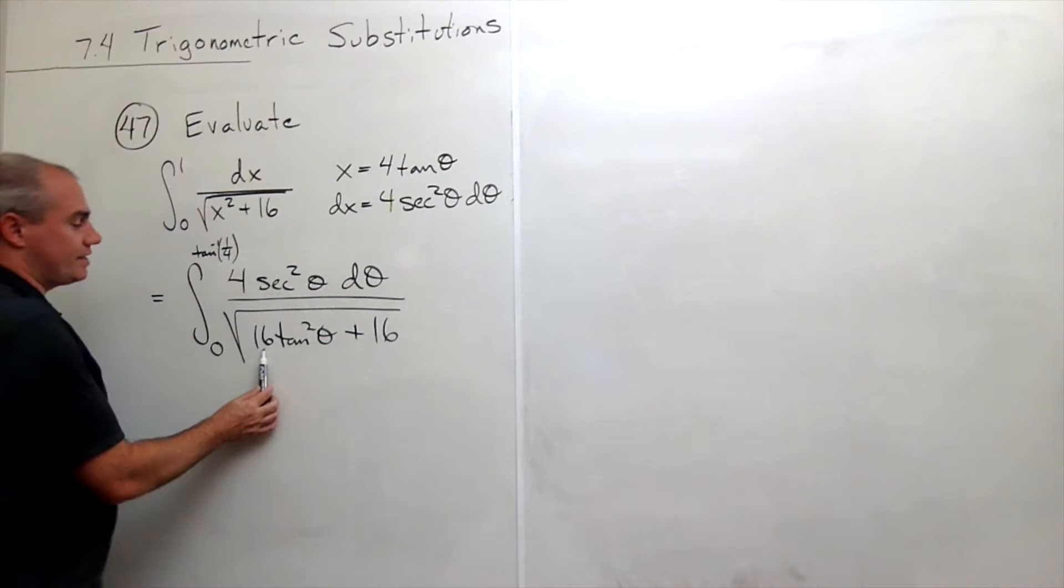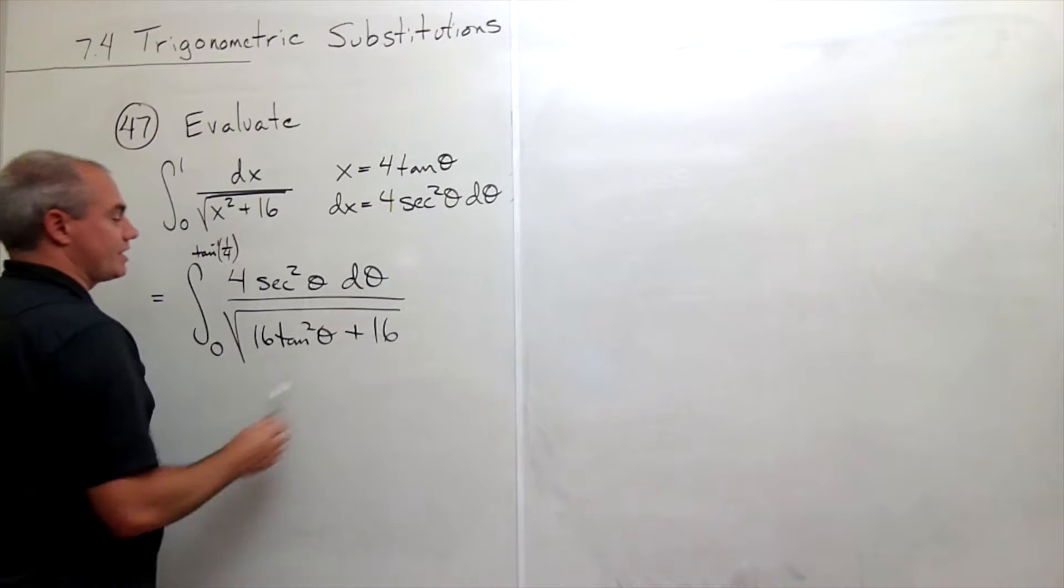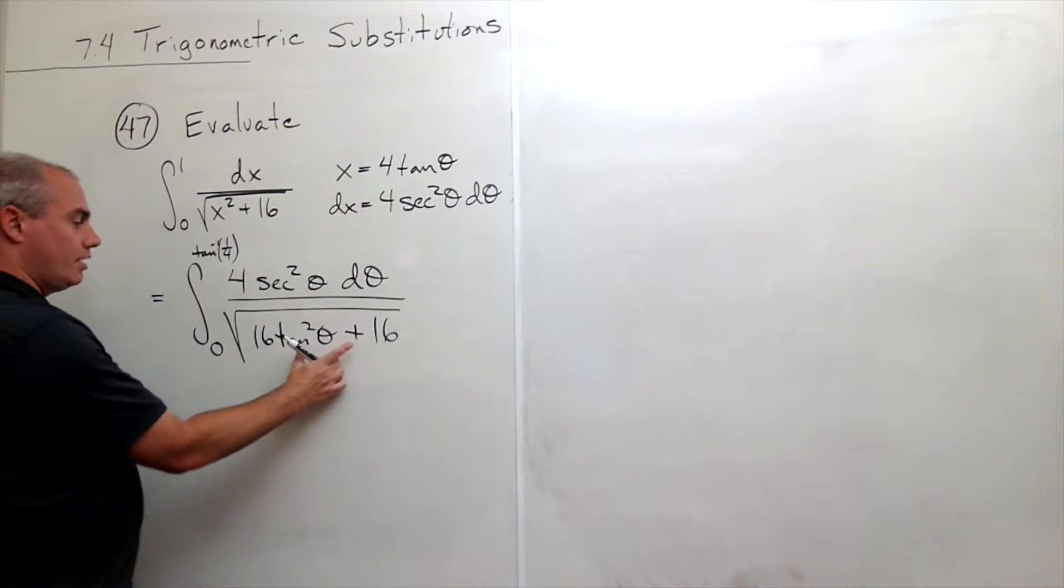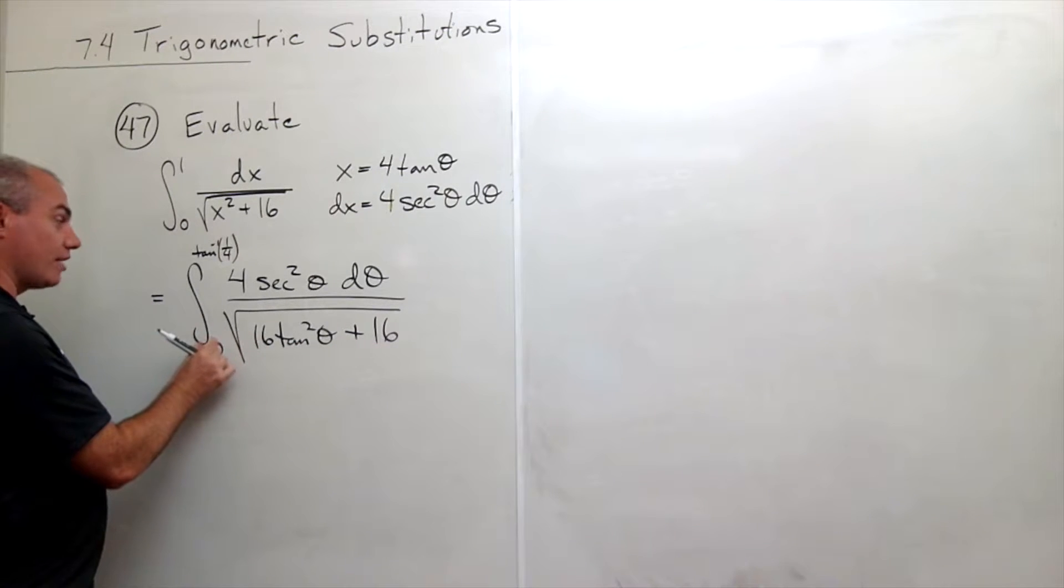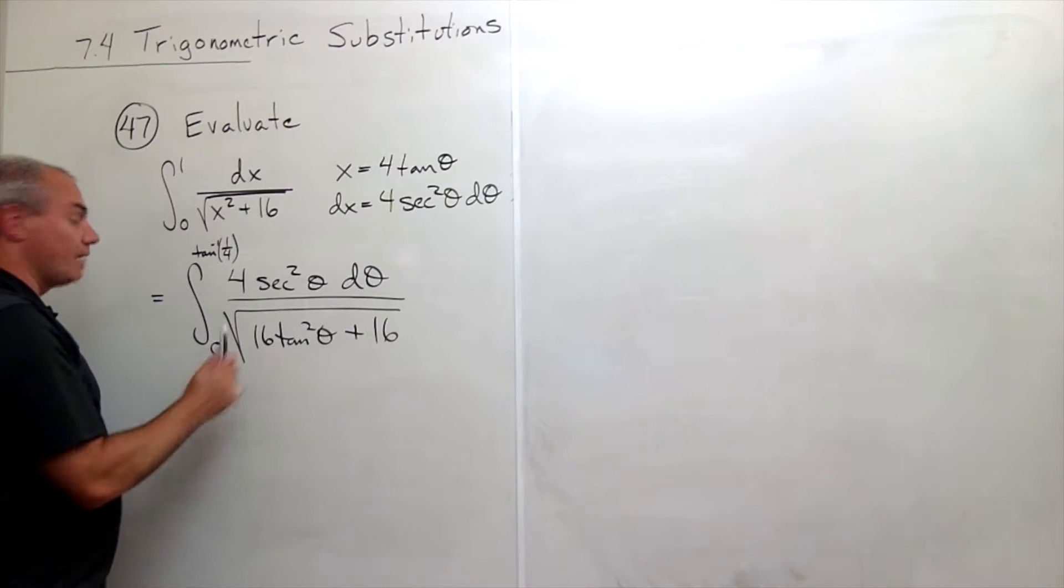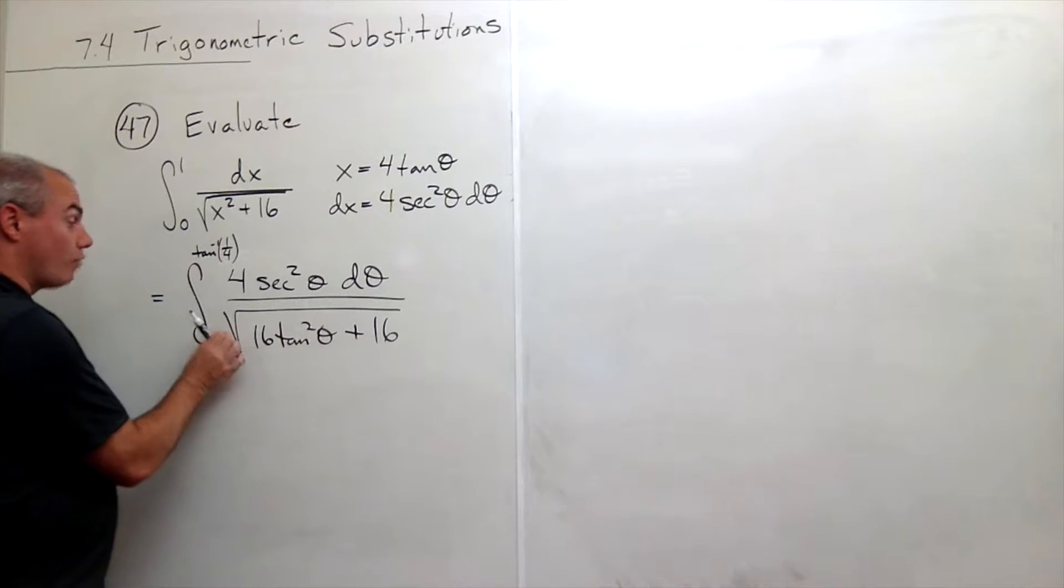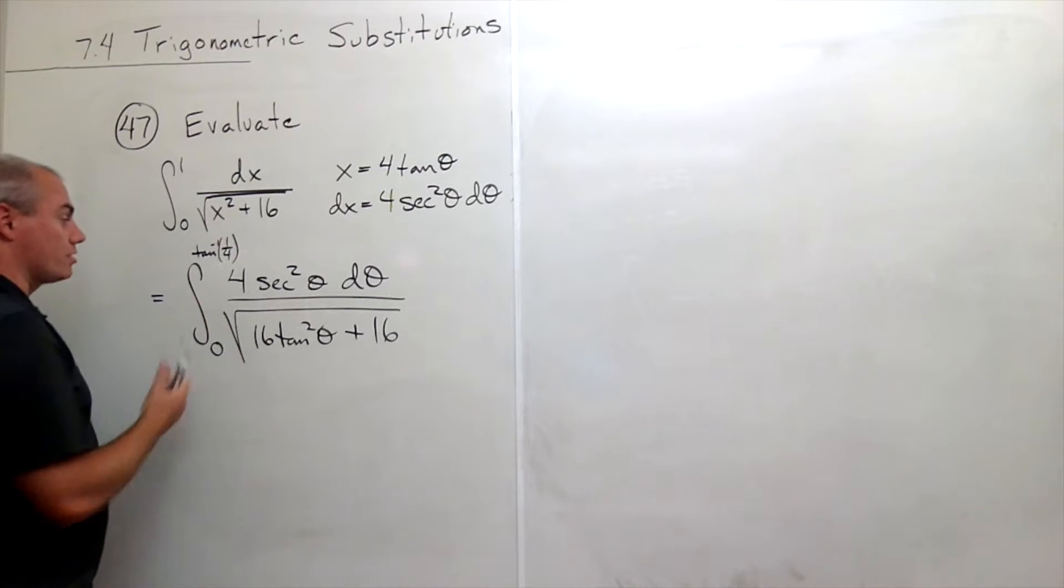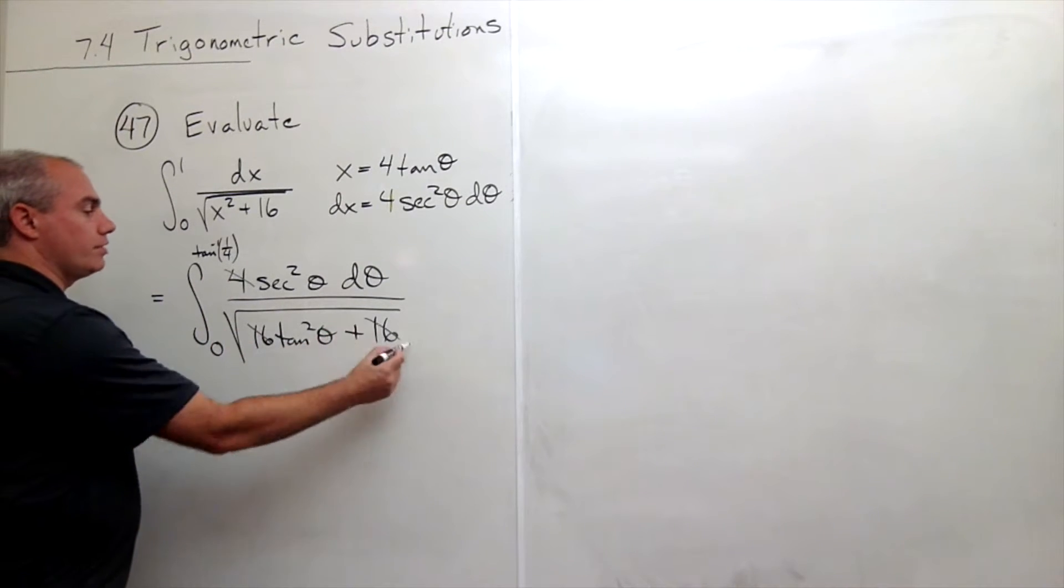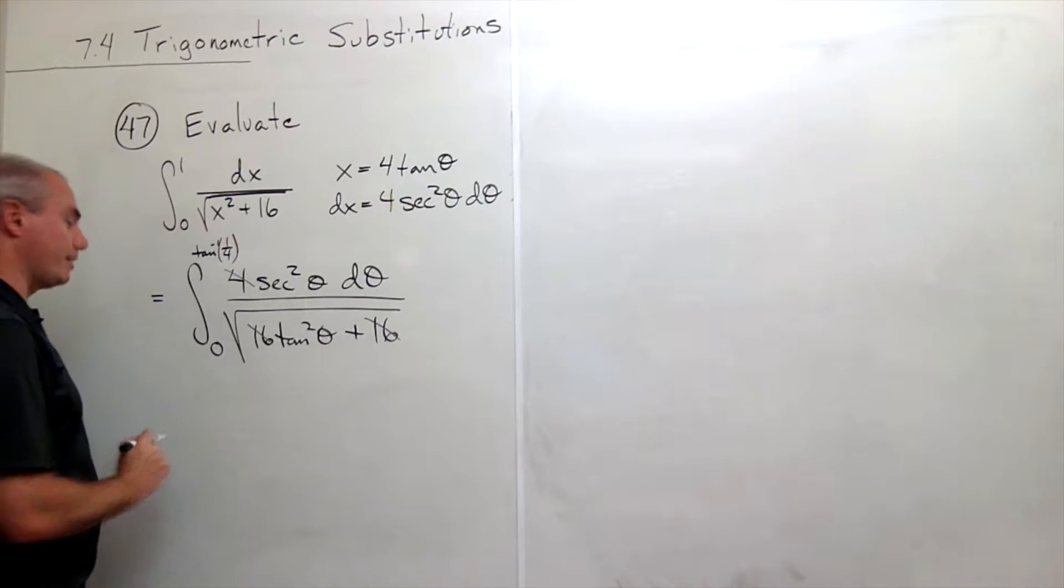Let's simplify 16 tangent squared theta plus 16. I can pull the 16 out, factor it out, and I can even take it outside the integral. When it comes outside the integral, it will be a 4. When it comes outside the radical, it will be a 4 also. So I could cancel that 4 with those 16s, and I just have a 1 right there.